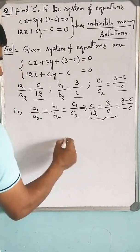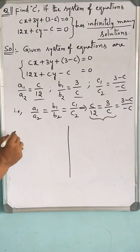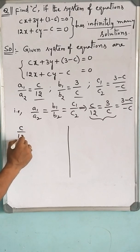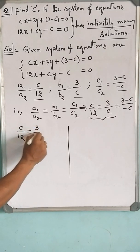First of all, let us equate these two. That is, C by 12 equals 3 by C. Do cross multiplication.